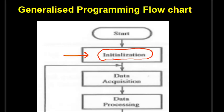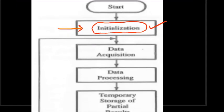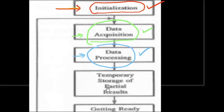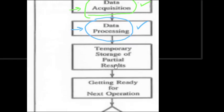During initialization, we must properly set up the program: if we are using memory, which memory pointer to use and where to initialize it; if we are using a counter, what should the count be and which register to use. The second part is data acquisition — how to acquire the data, which may be in memory or from an input/output device. The third block is data processing — adding, subtracting, rotating, or any other operation to perform on the data.